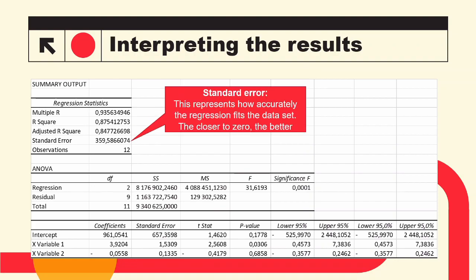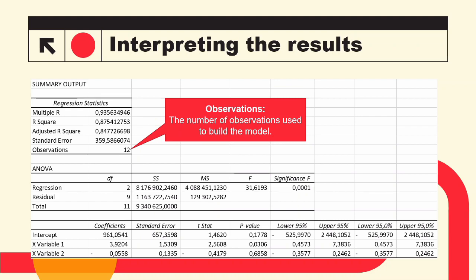Next we have the standard error, which, similar to the R-squared measures, also measures how accurately the regression model fits the data — the closer to zero, the better. We also have the number of observations, which simply represents the number of cases used to build the model. In this example, we only used 12 observations, which is very small. Small sample sizes can be problematic and may not provide accurate results, so we would need to confirm that the sample is suitably representative of the population as a whole.